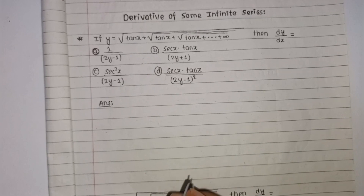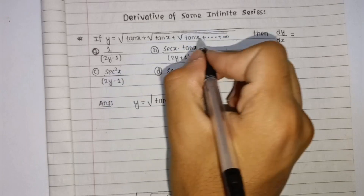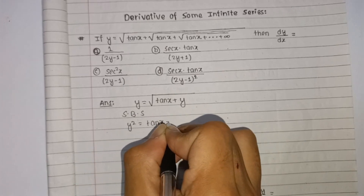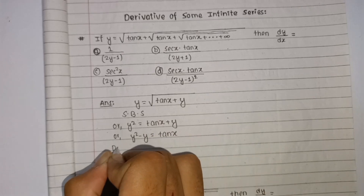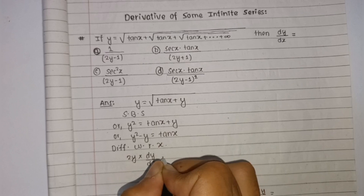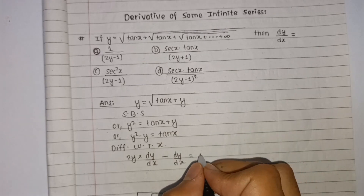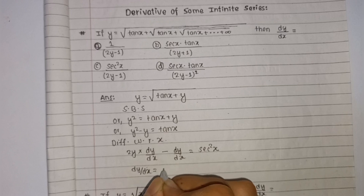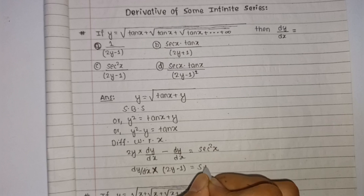Now, y is equal to root under (tan x plus y), which is our f(x). Squaring both sides gives y square is equal to tan x plus y, so y square minus y is equal to tan x. Differentiating with respect to x: 2y times dy/dx minus dy/dx is equal to sec squared x. Taking dy/dx common: dy/dx times (2y minus 1) is equal to sec squared x.